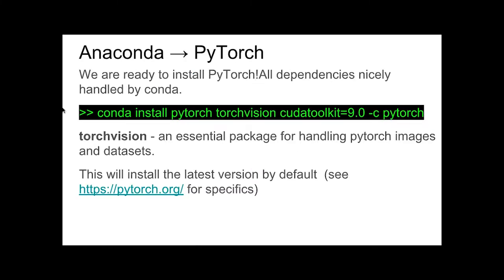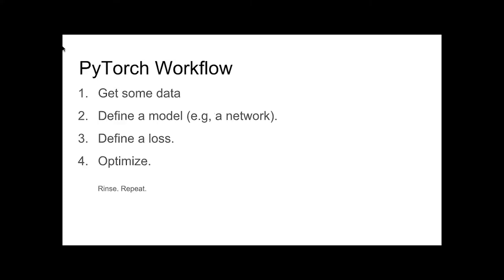Now we're ready to install PyTorch. Very simple — just one command line, taken directly from pytorch.org. They have a nice interface to specify which version, CUDA version, or operating system you want. It should work out of the box. So what's the workflow? It's pretty trivial: you get some data, define a model and loss function, optimize — and that's all.